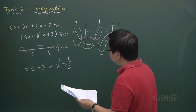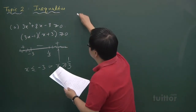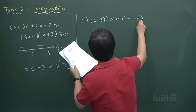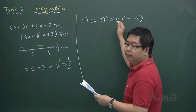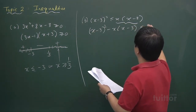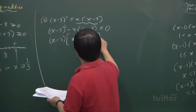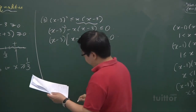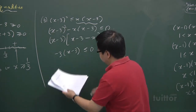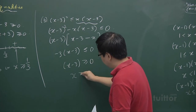For part B, we have (x−3)² ≤ x(x−3). We subtract the right-hand side from both sides, then factorize by taking out (x−3). This gives us (x−3) times (−3) less than or equal to zero. Since we divide by −3, we must change the sign, leaving only x greater than or equal to 3.